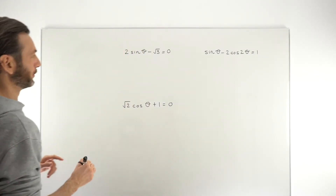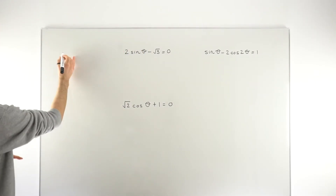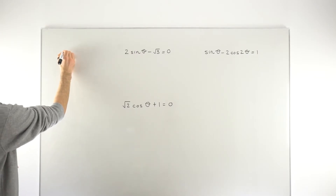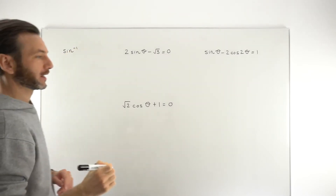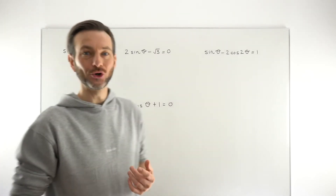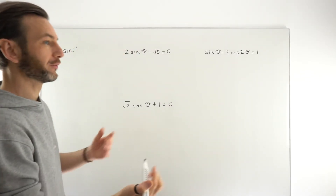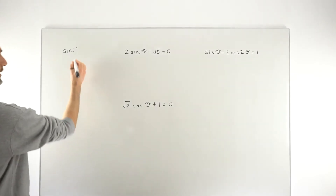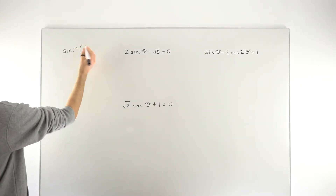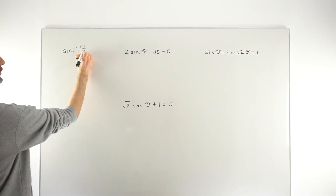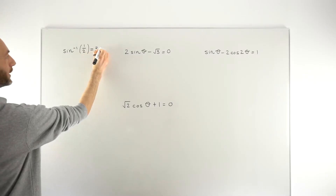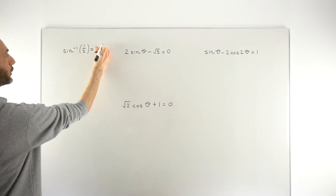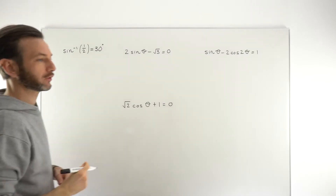If you were using a calculator, the operation you would be using is the inverse. So you'd be using things like sine inverse, cosine inverse, tan inverse — you're probably familiar with those already. You would basically punch it into the calculator, so sine inverse of some number like a half, and it returns a value — in this case, 30 degrees.